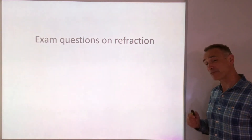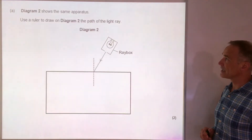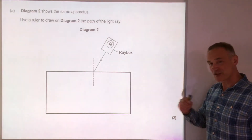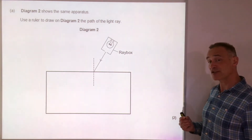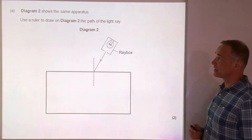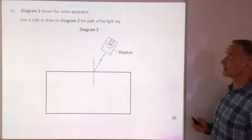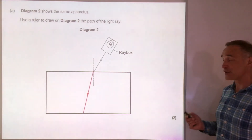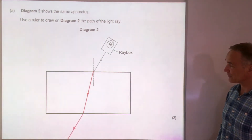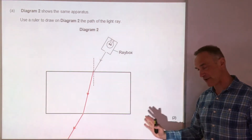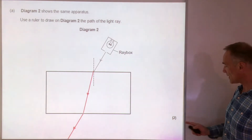Now let's look at some exam questions on refraction to see how you would apply what you've learned. Some of these are drawing questions which you won't be able to do from the video, so pause and think about how you would draw it. For the first question: light travels into glass, it slows down so bends towards the normal; then it bends away from the normal going out as it speeds up, and the exit angle should be the same as the entry angle. Two marks.